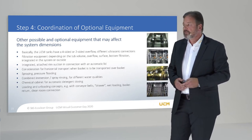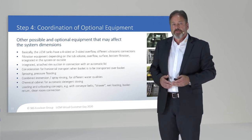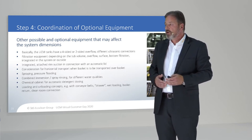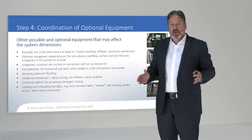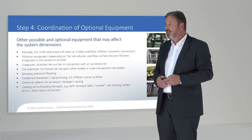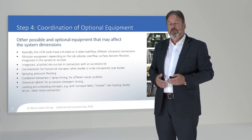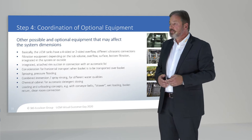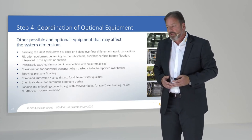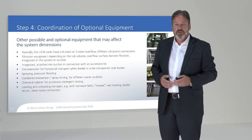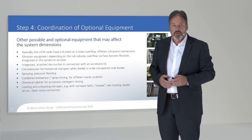The next step is coordination of optional equipment, which may also affect the system dimensions. The UCM tanks have a four- or two-side overflow and different kinds of ultrasonic connections. The four-side overflow is UCM standard. A two-side overflow is a possibility to make the machine and tanks more compact, but the functions are very similar, because the overflow rate for each tank during cleaning and rinsing must be as high as possible.